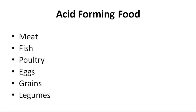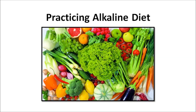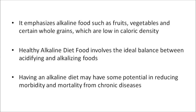Acid-forming foods comprise meat, fish, poultry, eggs, grains, and legumes. The alkaline diet is also known as the alkaline-ash diet or acid-alkaline diet. It emphasizes alkaline foods such as fruits, vegetables, and certain whole grains, which are low in caloric density. A healthy alkaline diet involves the ideal balance between acidifying and alkalizing foods. Having an alkaline diet may have potential in reducing morbidity as well as mortality from chronic diseases.